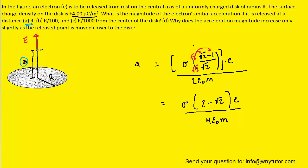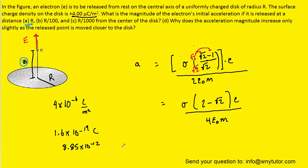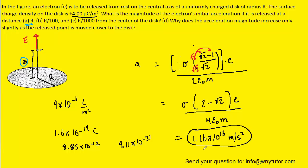At this point we plug in the known values. Sigma, the surface charge density, is given in microcoulombs, so we multiply by 10 to the minus 6 to convert to coulombs per meter squared. The charge e of an electron is 1.6 times 10 to the minus 19 coulombs. Epsilon is 8.85 times 10 to the minus 12. The mass of the electron is 9.11 times 10 to the minus 31 kilograms. Plugging in those four values, we get roughly 1.16 times 10 to the 16 meters per second squared — the correct answer to part A.